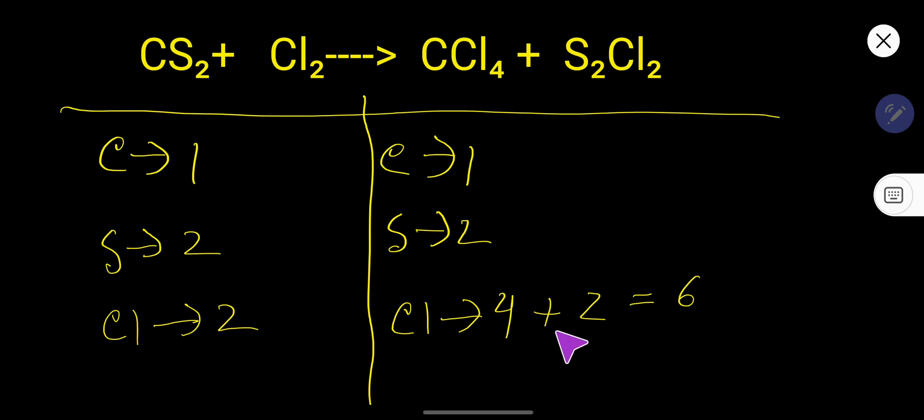Carbon here one, one, so carbon is already balanced. Sulfur two, two, so sulfur is already balanced. You have nothing to do. But here chlorine two, here six. To balance chlorine, what can you do?